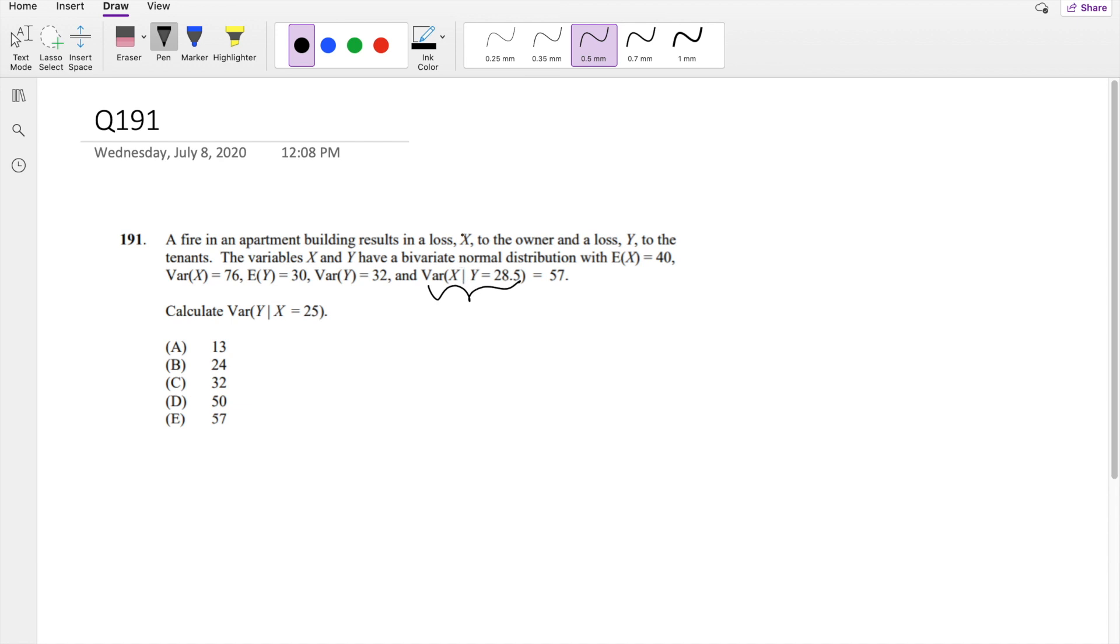So how do we figure it out? We have to know that for a bivariate normal distribution, there is this conditional variance formula that says if the variance of x given y is equal to some y, then this is equal to theta x squared times 1 minus rho squared. And you can also say the same for y given x is equal to some little x, this is equal to theta y squared times 1 minus rho squared.